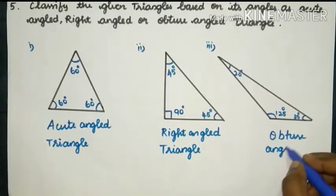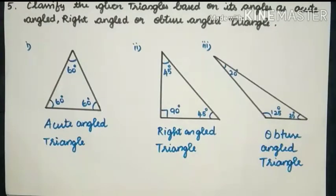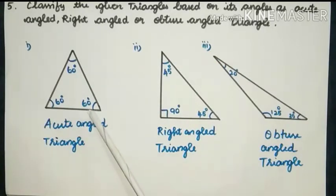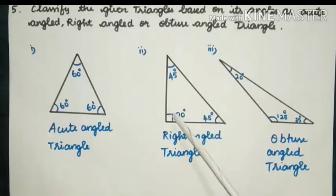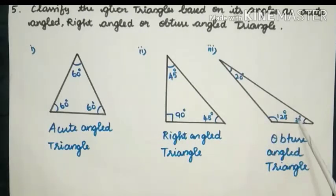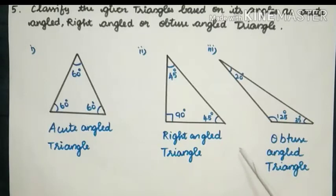Summary: first triangle — all three angles are acute (between 0° and 90°) so it is an Acute Angled Triangle. Second — one angle is 90°, so it is a Right Angled Triangle. Third — one angle lies between 90° and 180°, so it is called an Obtuse Angled Triangle.